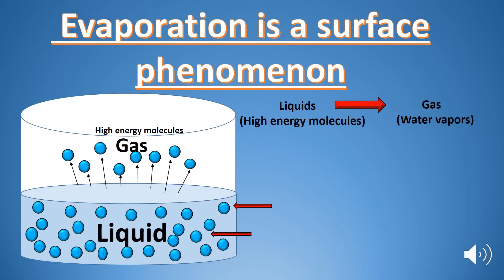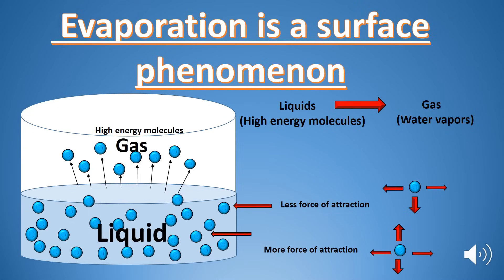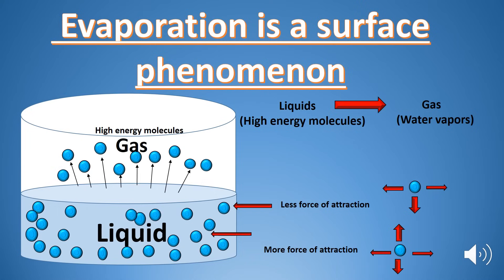Evaporation is a surface phenomenon. As shown in the diagram of the liquid and gaseous state, the molecules below the surface of the liquid have stronger forces of attraction from all sides. Whereas the molecules at the top of the liquid do not attract from above the surface, so they have lesser intermolecular force of attraction. By gaining a little amount of energy from the surrounding, these molecules increase their kinetic energy to such an extent that they overcome the force of attraction and escape as gas.